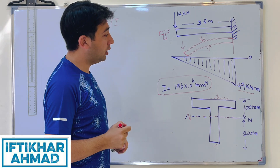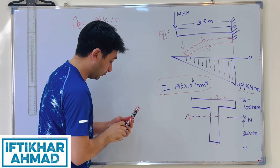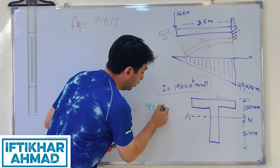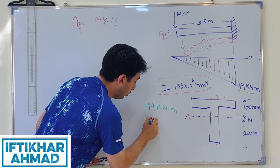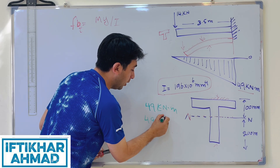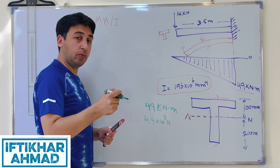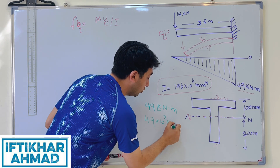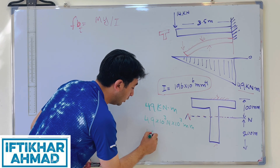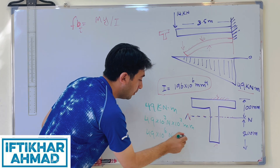To convert 49 kilonewton meters: we replace kilo with 10³ to get Newtons, and replace meters with millimeters by multiplying by another 10³. So 49 kilonewton meters equals 49 × 10⁶ Newton millimeters.